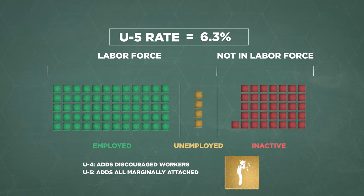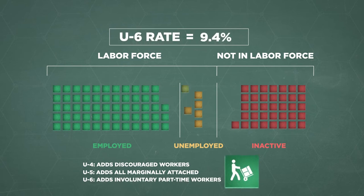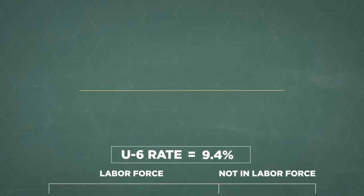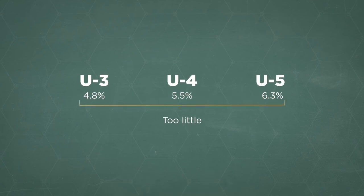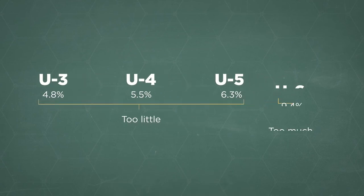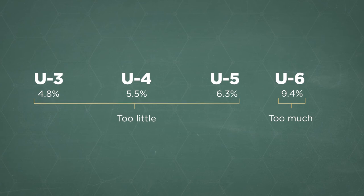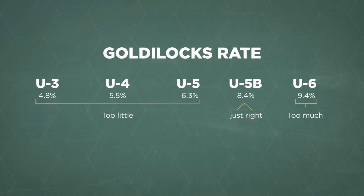But all these rates leave some people who want a job still counted as inactive. Now, there is one more measure, the U6. It adds in part-time workers who want full-time jobs. But adding in these workers muddies the issue of joblessness — and remember, joblessness is what we're really interested in measuring. So U3, U4, and U5 don't count everyone who wants a job, and U6 confuses the idea of joblessness. That's why we need a new Goldilocks rate, the one that's just right.